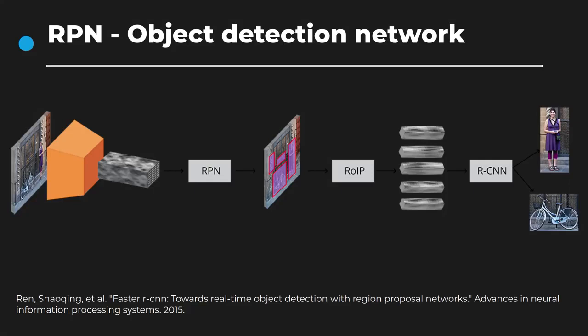One approach for object detection using deep networks is to decompose the task into sub-problems. The first step is to find a set of possible bounding boxes which may contain an object. As illustrated in this figure, the input image is passed through a pre-trained CNN network to extract a convolutional feature map. This feature map is used by the region-proposal network to extract bounding boxes of interest and select the ones that may contain an object.